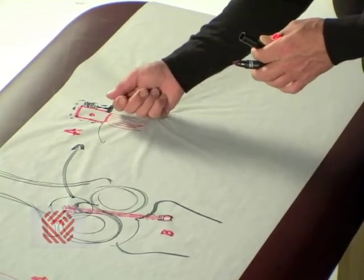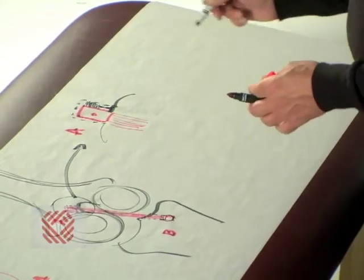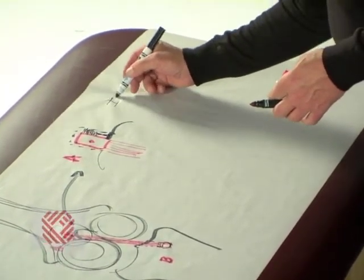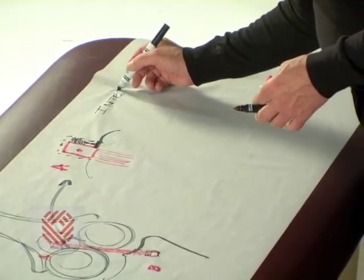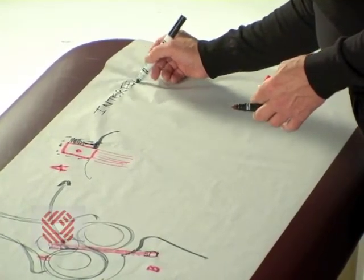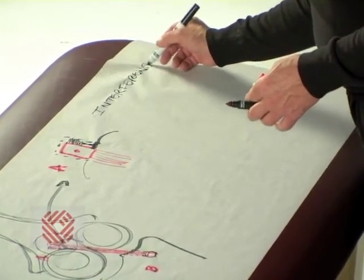This prevents our graft from pulling out. And indeed, we call this an interference screw.